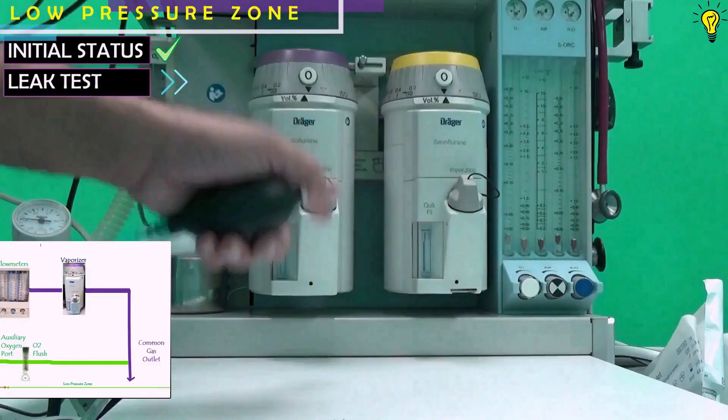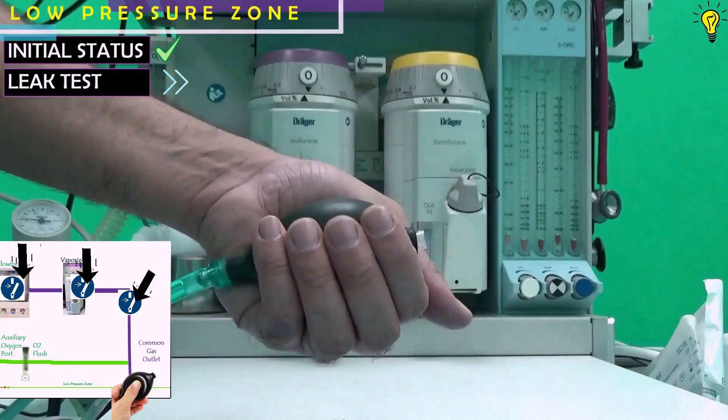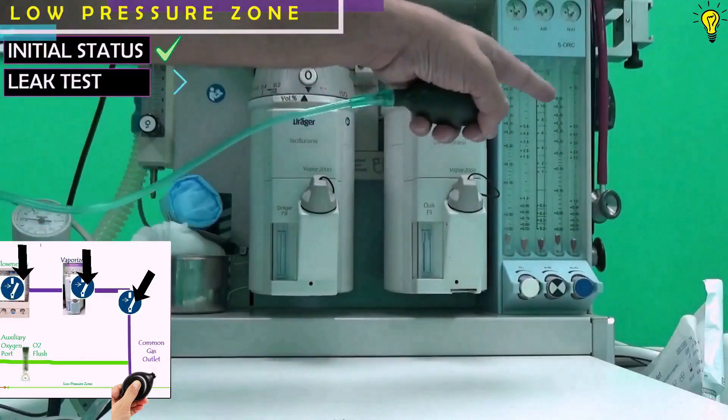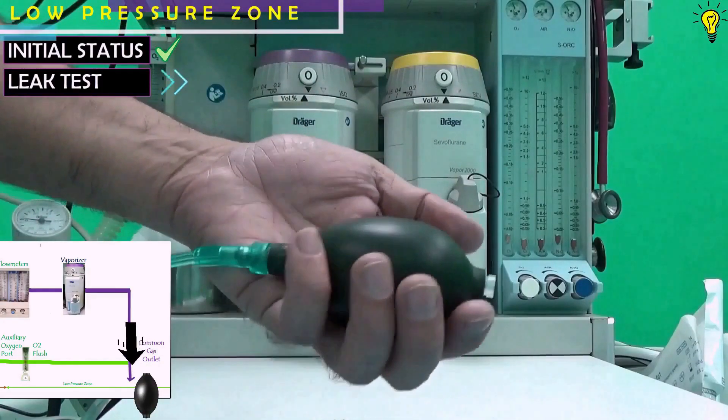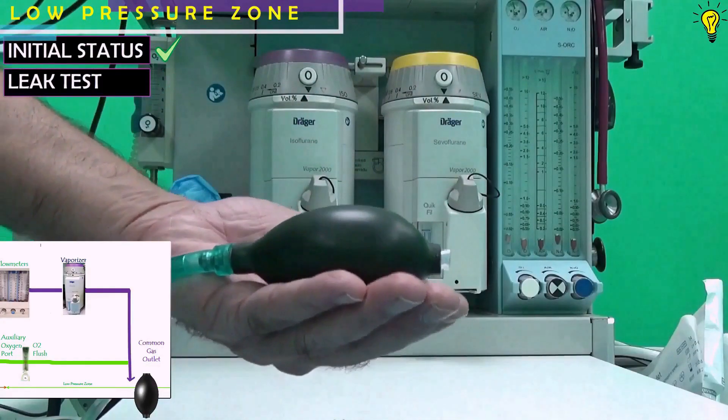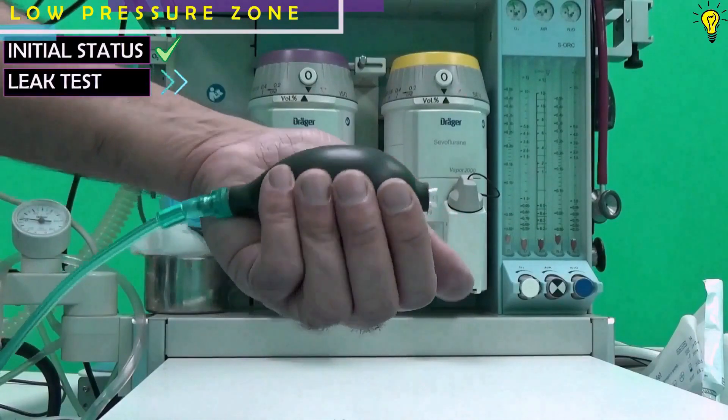Now if there is any leak in the system, then the negative pressure generated by this suction bulb would drive the ambient air from the breakage point into the circuit and it would inflate the bulb. But if there is no leakage, the bulb would stay deflated for 10 seconds. So let's see.